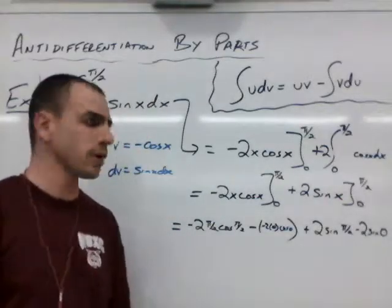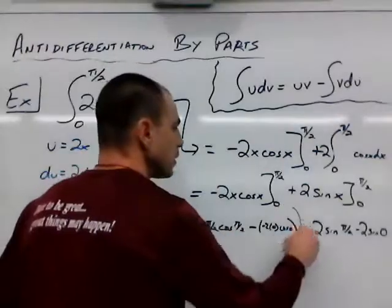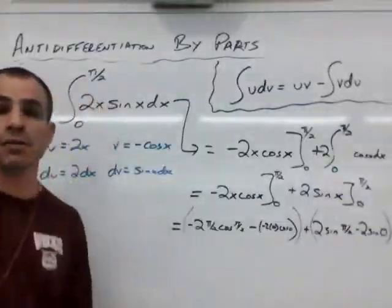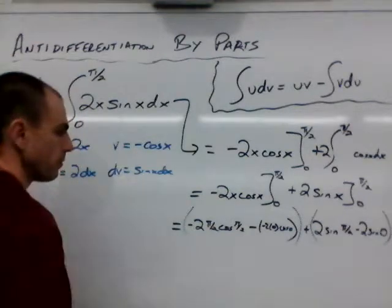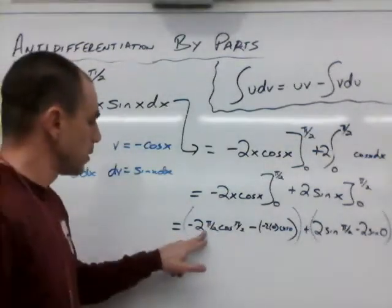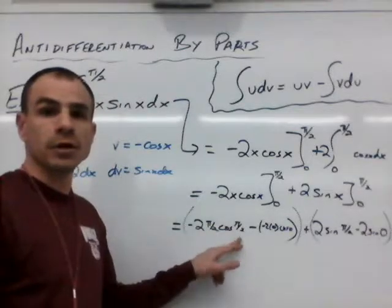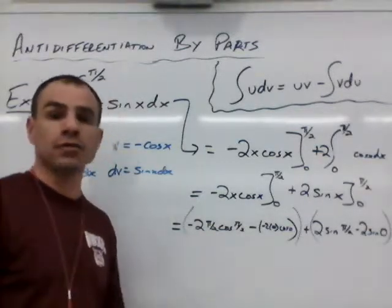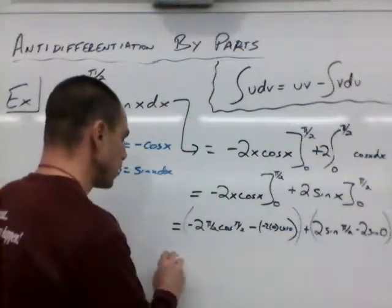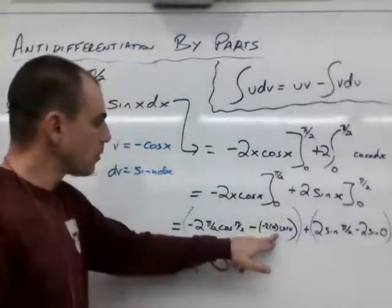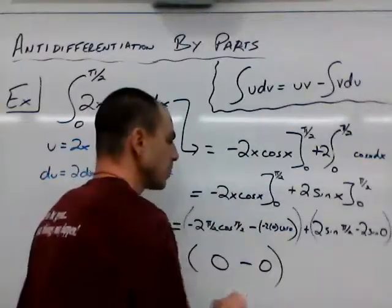And now we have 2 times the sine of pi over 2 minus 2 times the sine of 0. Okay, there's our second part of our expression. And if it helps to kind of group these together, you absolutely can do that. All right, so what's going on here? Well, we see negative 2 times pi over 2, but we also see the cosine of pi over 2, and we know from our trig common value chart, the cosine of pi over 2 is equal to 0, so this whole term is going to 0. And then we have 2 times 0, so that term's going to 0.